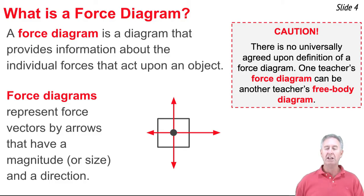So when we see a long arrow to the right, what that tells us is there's a strong force to the right. And a short arrow to the left means there's a weaker force to the left. This is what we call a force diagram.